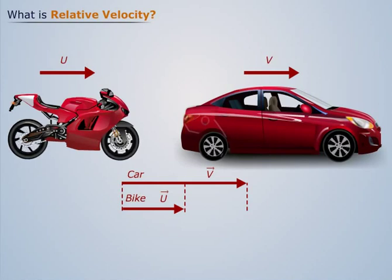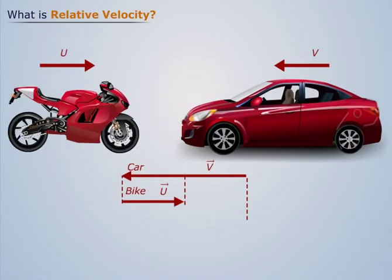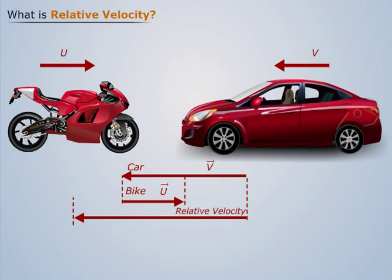Now if we take the difference between vector v and vector u, it will give us the relative velocity. Similarly, if the car and bike are moving towards each other, then their relative velocity will be vector v minus vector u.